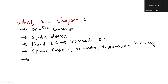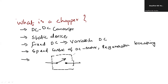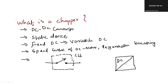Usually the chopper will be represented as a switch with a dotted square. We write CH — capital C, capital H. Otherwise we can represent it in the form of a small block diagram as drawn on the screen. It is basically a DC-DC converter.